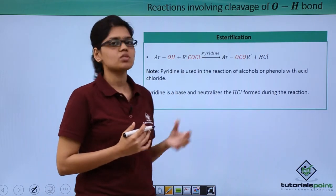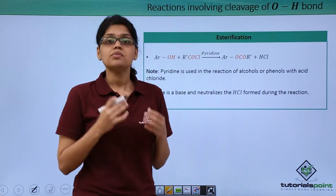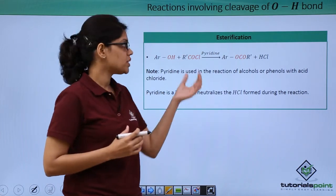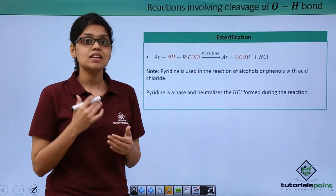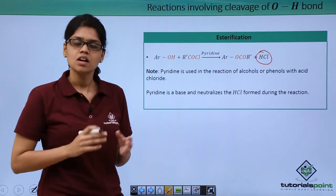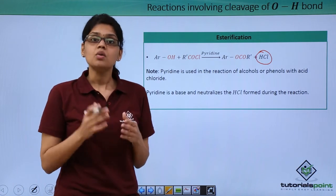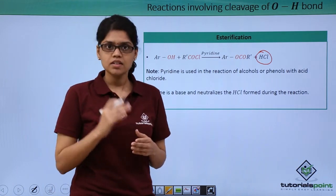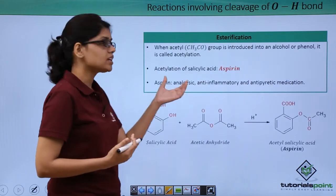The function of pyridine is that, since it's a strong base, it essentially neutralizes the byproduct HCl formed in this particular reaction. Now acetylation reactions in which we add an acetyl group to either an alcohol or phenol is called acetylation.